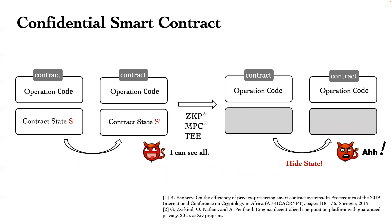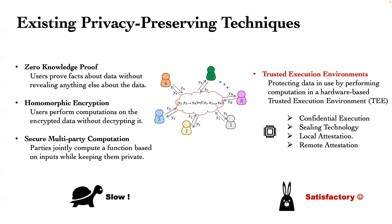Different from the conventional smart contract, a confidential smart contract aims to hide the contract state so that the public cannot see any useful knowledge of the state. Currently, many technical privacy-preserving solutions have been proposed, such as zero-knowledge proof, multi-party computation, and homomorphic encryption. However, these solutions require increasing computation complexity, making executions run slowly.